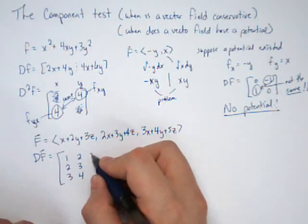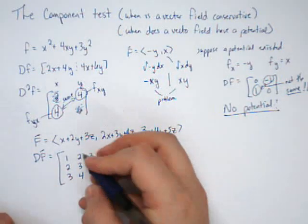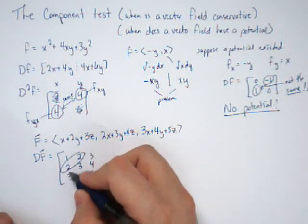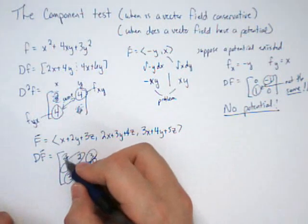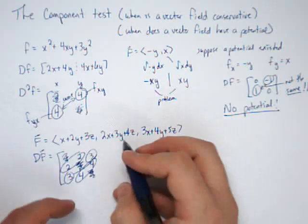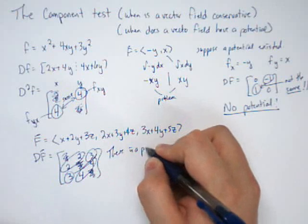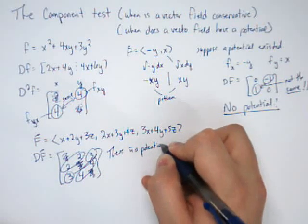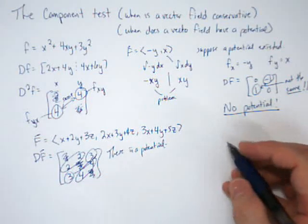Now I need a derivative with respect to z, which will get me a 3, a 4, and a 5. And the key is those two numbers are the same, those two numbers are the same, and those two numbers are the same. It doesn't matter what the numbers in the middle are, but this matrix is symmetric, so there is a potential. We could find the potential by integrating, but we're going to skip and just look at another example.